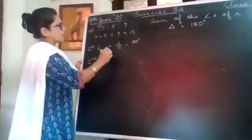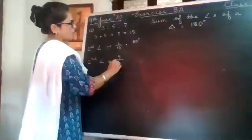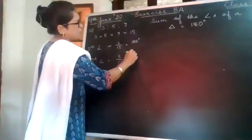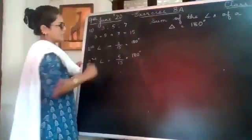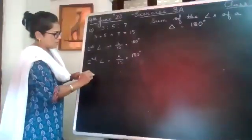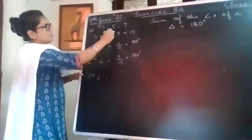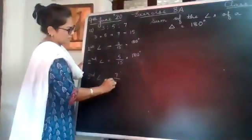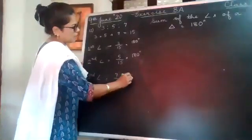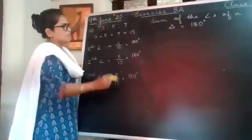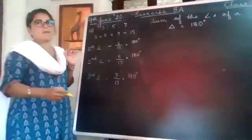180 degrees. The third angle will be 7 upon 15 into 180 degrees. Now, these can be divided by